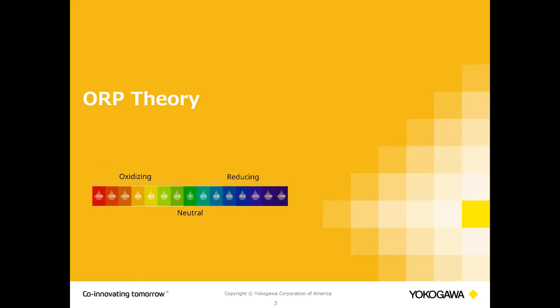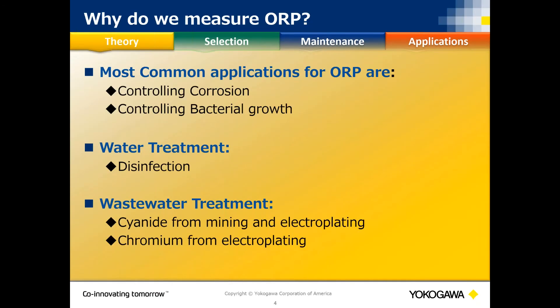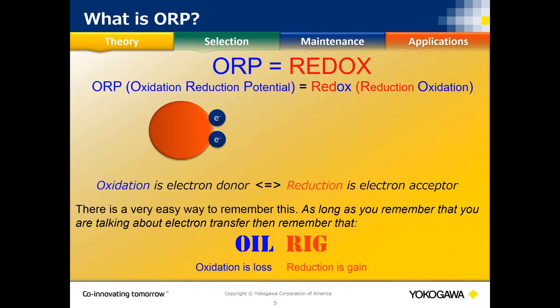Common ORP measurements in a plant include cooling towers for biocide growth and corrosion control. ORP measurements also indicate piping deterioration. For wastewater, plants dealing with cyanide or chromium from electroplating must go through two stages of ORP reactions to ensure that the chromium and cyanide exiting the plant are not in the toxic state that could harm the environment or living organisms.